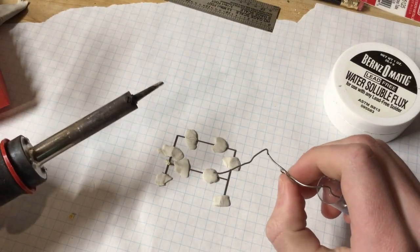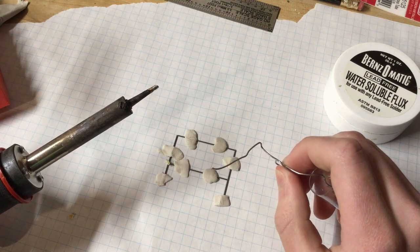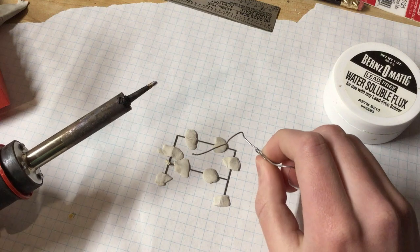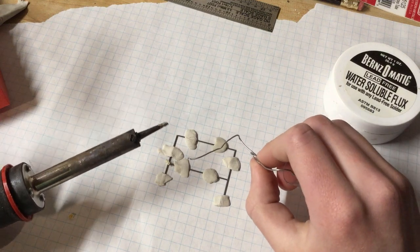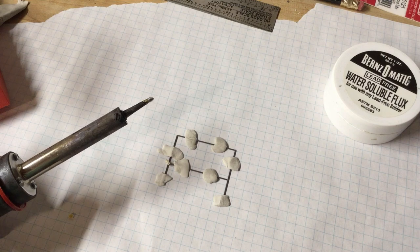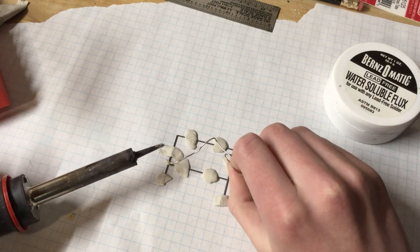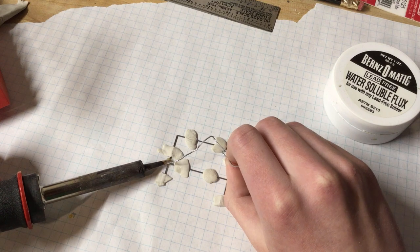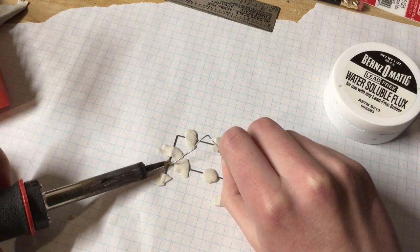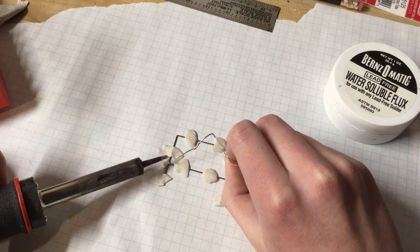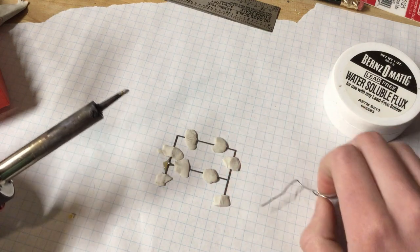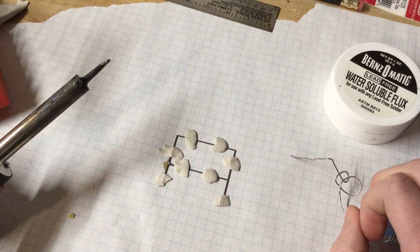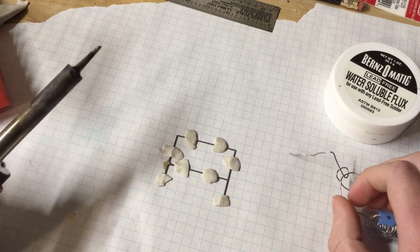So my soldering iron is heated up, so I'm ready to solder my first joint. Now I made sure to put flux on the joint before I solder - that ensures that the bond is firm and clean. So I'm going to try to work pretty quick, get my solder in there. And that's all there is to it. I'll solder up the other joints and we'll see what this thing looks like.